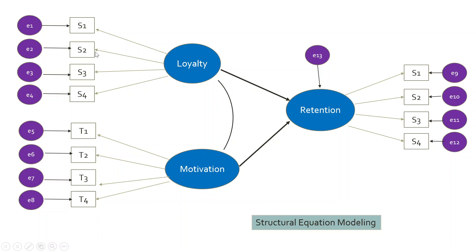Loyalty is captured with the help of four statements S1, S2, S3, S4, and these are their measured errors E1 to E4. Similarly, motivation is captured with the help of statements T1 to T4, and these are their measured errors. Loyalty has an effect on retention of an employee, and motivation has an effect on retention of an employee. E13 is the overall residual error of the model. This is structural equation modeling.